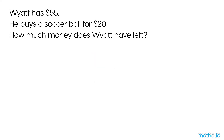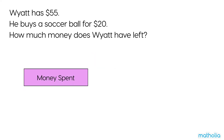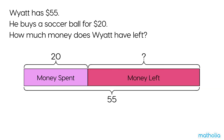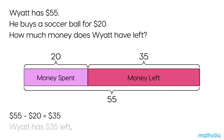Let's use a bar model to help find the answer. We know Wyatt had 55 dollars and spent 20 dollars. To find the amount of money Wyatt has left, we subtract. 55 dollars minus 20 dollars equals 35 dollars. Wyatt has 35 dollars left.